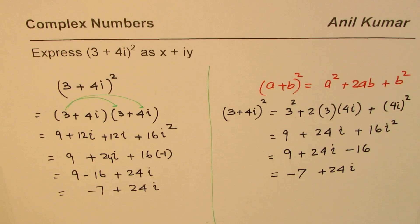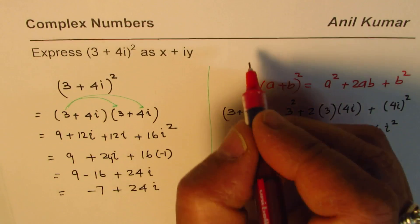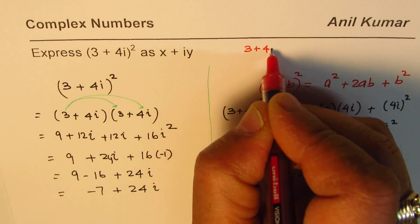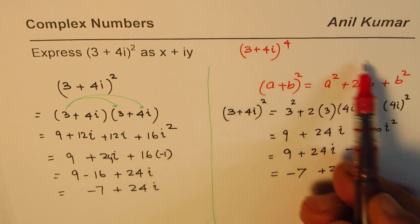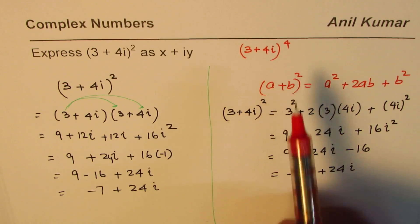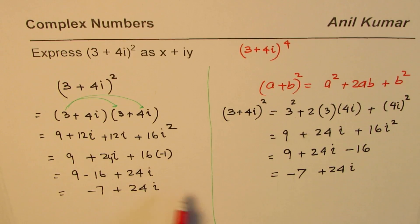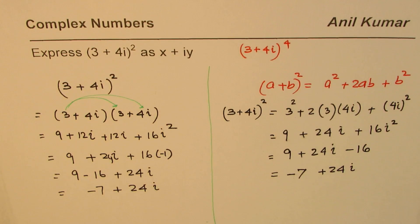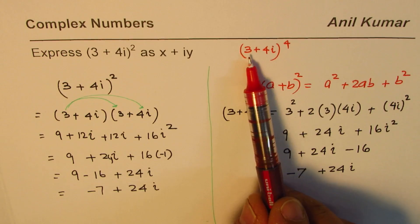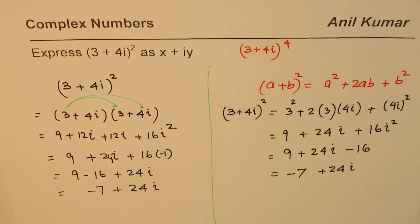Now if the powers are higher, let us say we change the equation to 3 plus 4i to the power of 4. How will you do that? You could use Pascal's triangle to do it, or you could multiply these terms. You could find square of this, so you could do square of square.